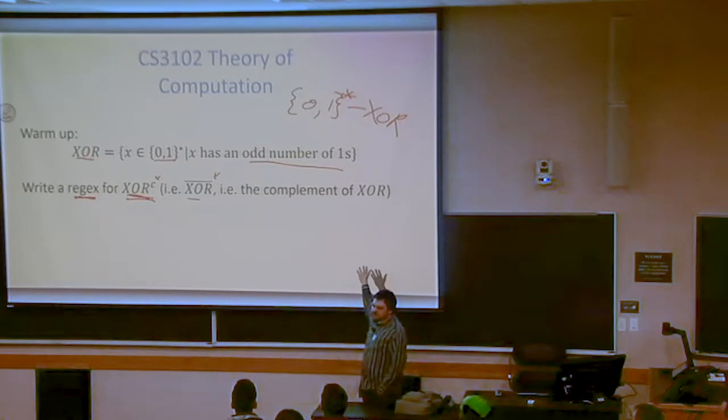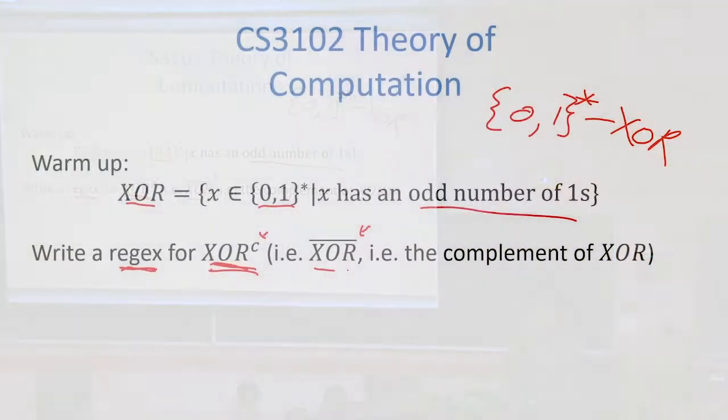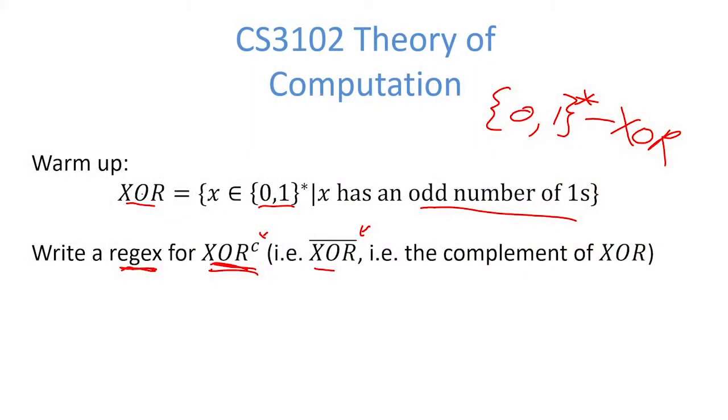So every string is gonna have some number of ones in it. If that number of ones was odd, that language should be XOR. It should belong to XOR. So if we want everything that doesn't belong to XOR, we want the ones that had an even number of ones.